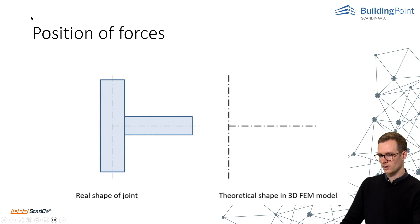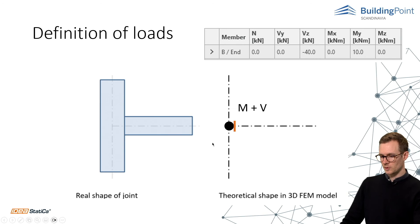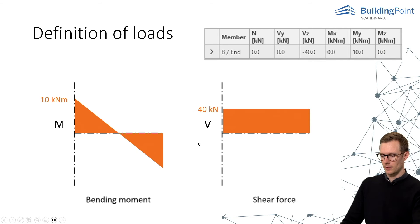Here we have the real shape of the joint and next to it we have the theoretical shape of the model. And those are different. And what we usually do is to input the internal forces from the simplified structural model and the nodal force of moment and shear like this.